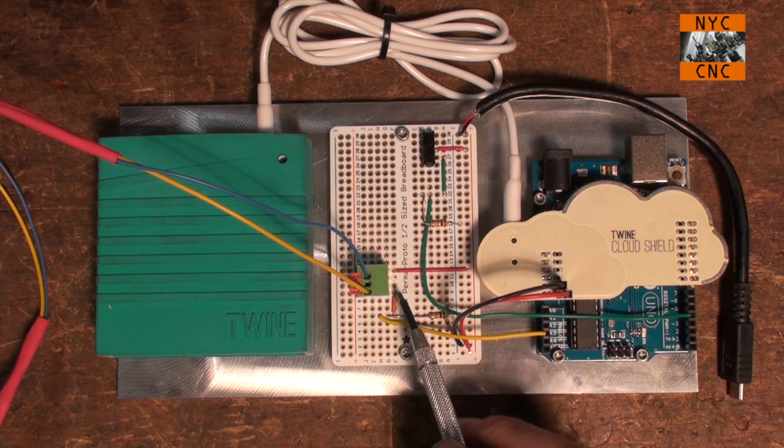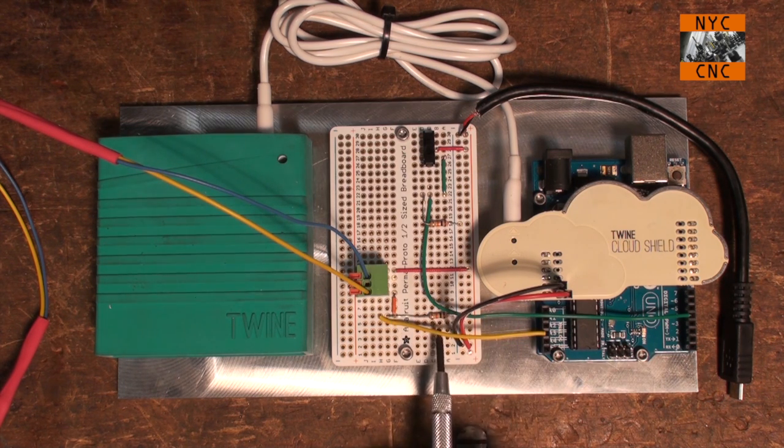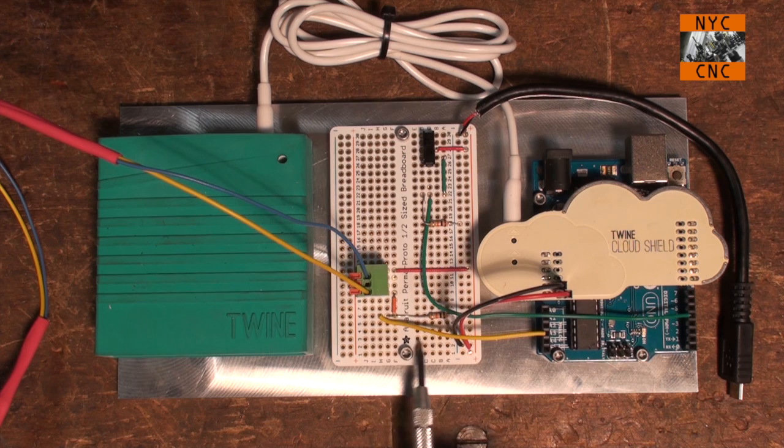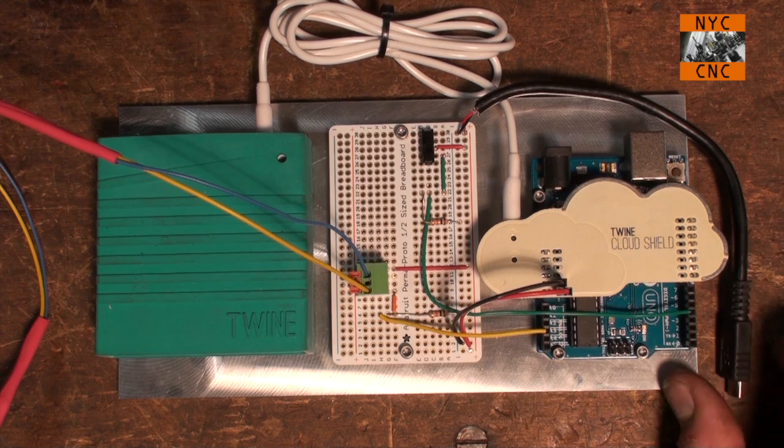The other goes via this orange jumper wire, pulled low with a 10k resistor to ground, and then via this yellow over to analog pin 3 on the Arduino.